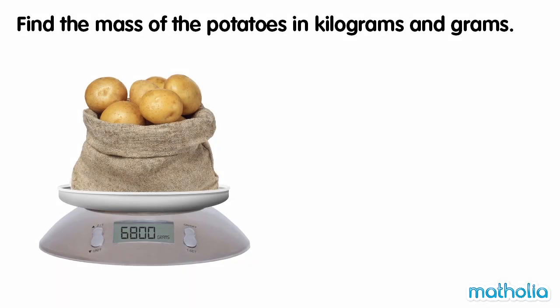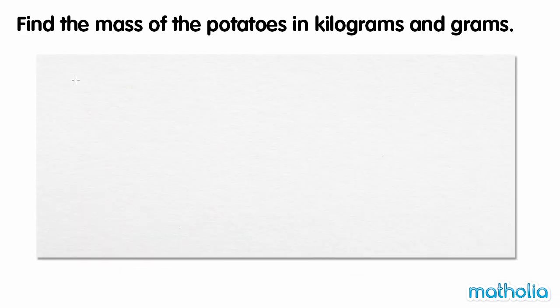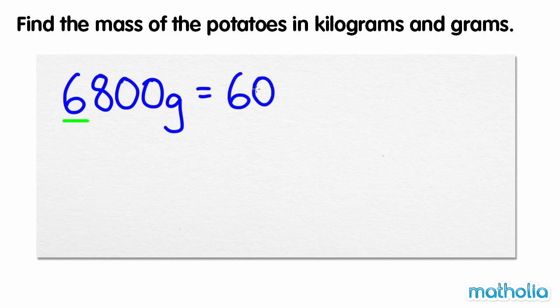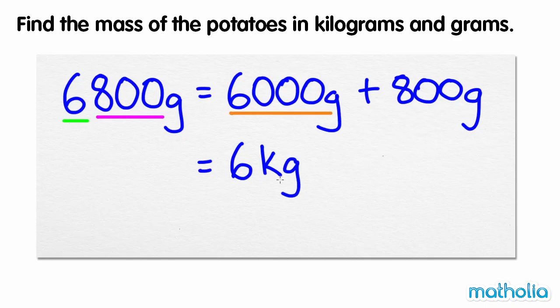Find the mass of the potatoes in kilograms and grams. The potatoes have a mass of 6,800 grams. We can rewrite 6,800 grams as 6,000 grams plus 800 grams. 6,000 grams is equal to 6 kilograms, so the mass of the potatoes is 6 kilograms, 800 grams.